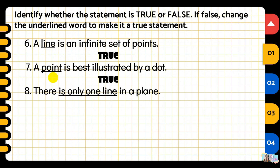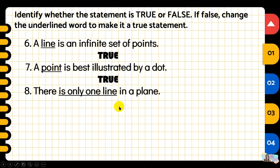Number eight: there is only one line in a plane. The underlined words are 'is only one line.' Is there really only one line in a plane? The answer is false — there is an infinite number of lines in a plane.